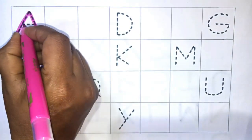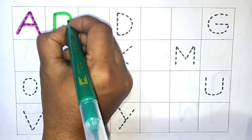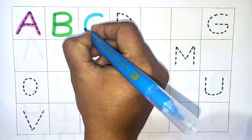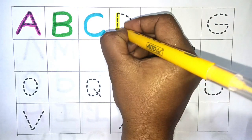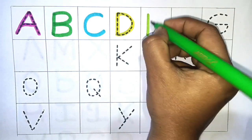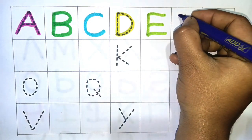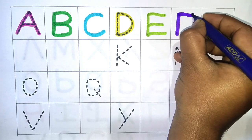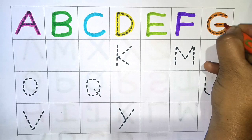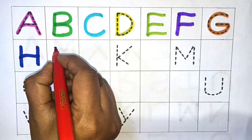A, A for apple. B, B for ball. C, C for cat. D, D for dog. E, E for elephant. F, F for fingers. G, G for goat. H, H for hand.